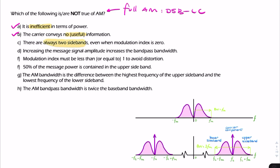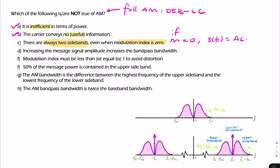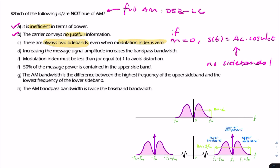Statement C says there are always two sidebands, even when the modulation index is zero. While it's true there are always an upper sideband and a lower sideband, if M equals zero — and M represents the depth of modulation — then all we have is the carrier: AC cosine omega_C T. There are no sidebands; the ratio of sideband amplitude is determined by the depth of modulation, so if there's no modulation, there are no sidebands. Statement C is false.